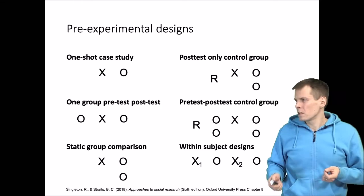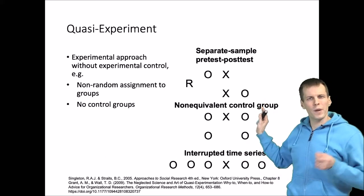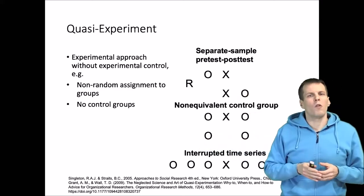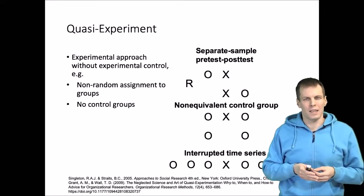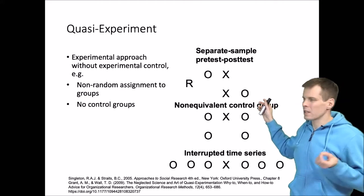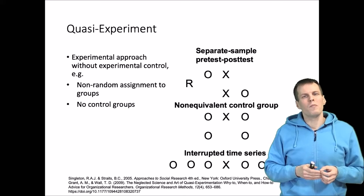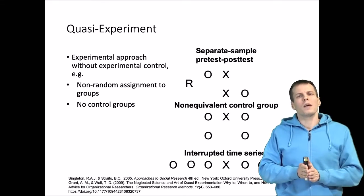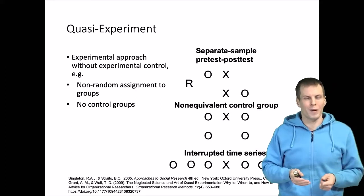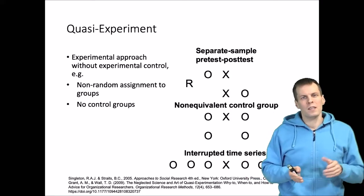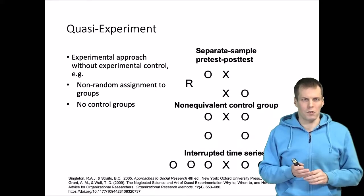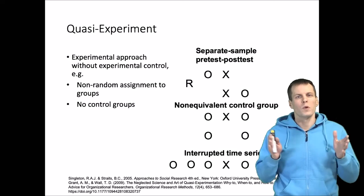Quasi-experiments are somewhere between pre-experimental and true experimental designs. We may have a non-random assignment or lack some observations or treatments in those previous designs. One design typically presented is the separate sample pre-test post-test design, where there is randomization but everyone receives the treatment at the same time. For example, if an important medication must be given to everyone for ethical reasons, we can still test its effectiveness by randomly measuring half the people before the medication and half after.